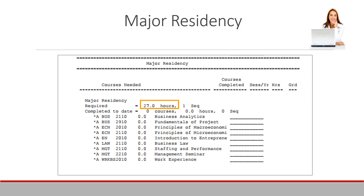Locate the major residency area on your audit. This example shows 27 required semester hours. This means that the 18 semester hours of major non-residency and the 27 semester hours of major residency required courses brings a total of 45 semester hours required for completion.